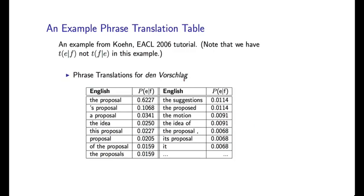Here's actually an example from a tutorial by Philip Cohen from EACL 2006, which is a conference in natural language processing. Here's an example he gave for the French string den Vorschlag, which means roughly speaking the proposal in English. And what I'm showing here is a list of phrases that are extracted. For example, one phrase is this German sequence of words paired with the proposal.